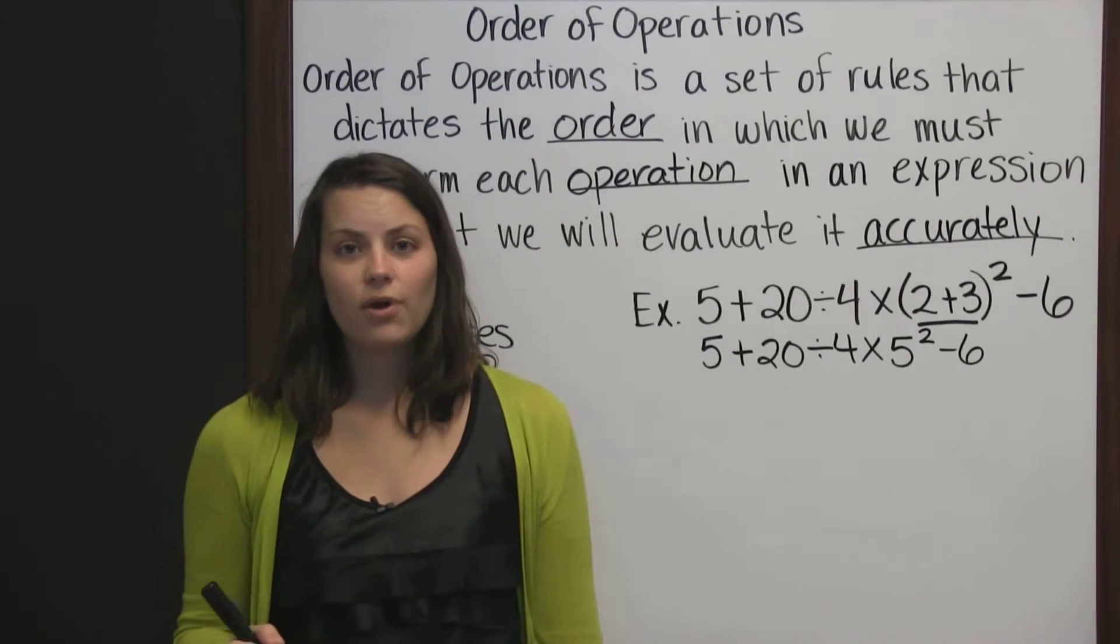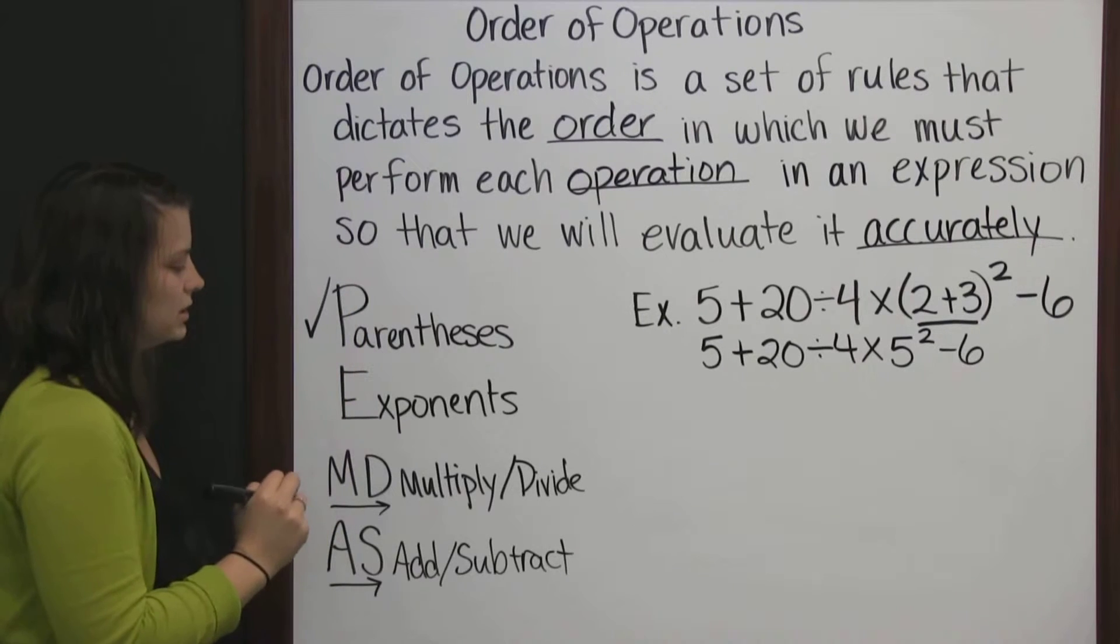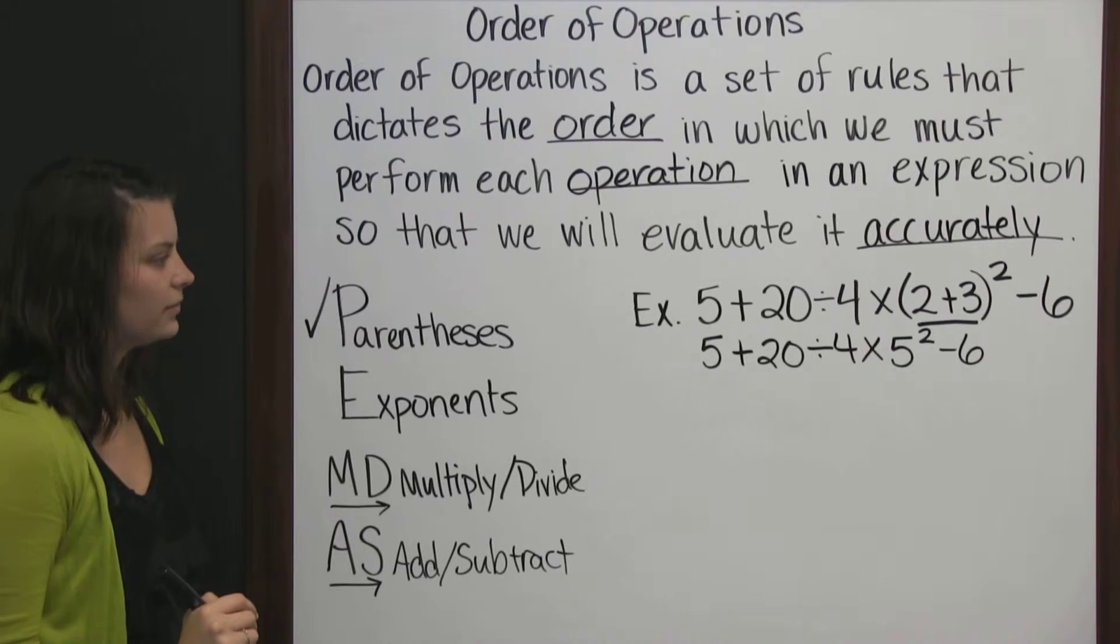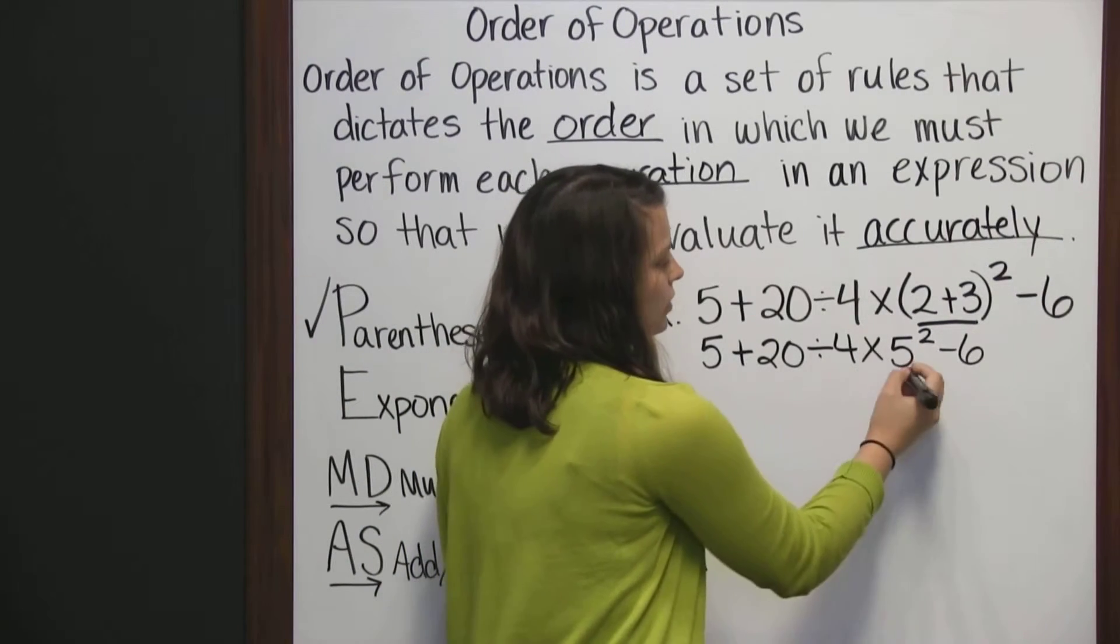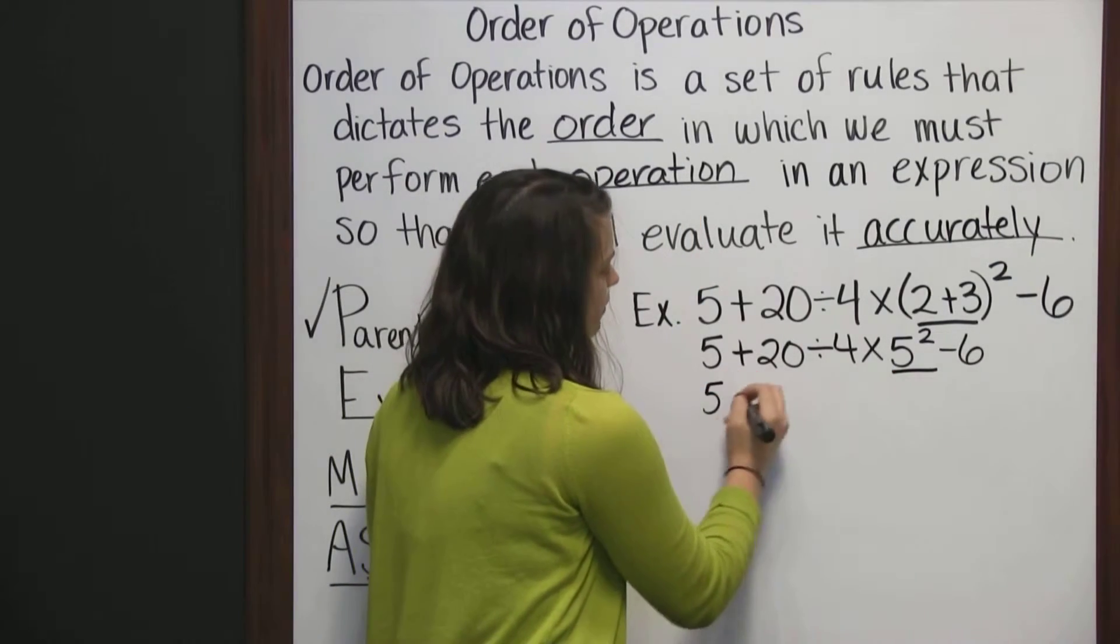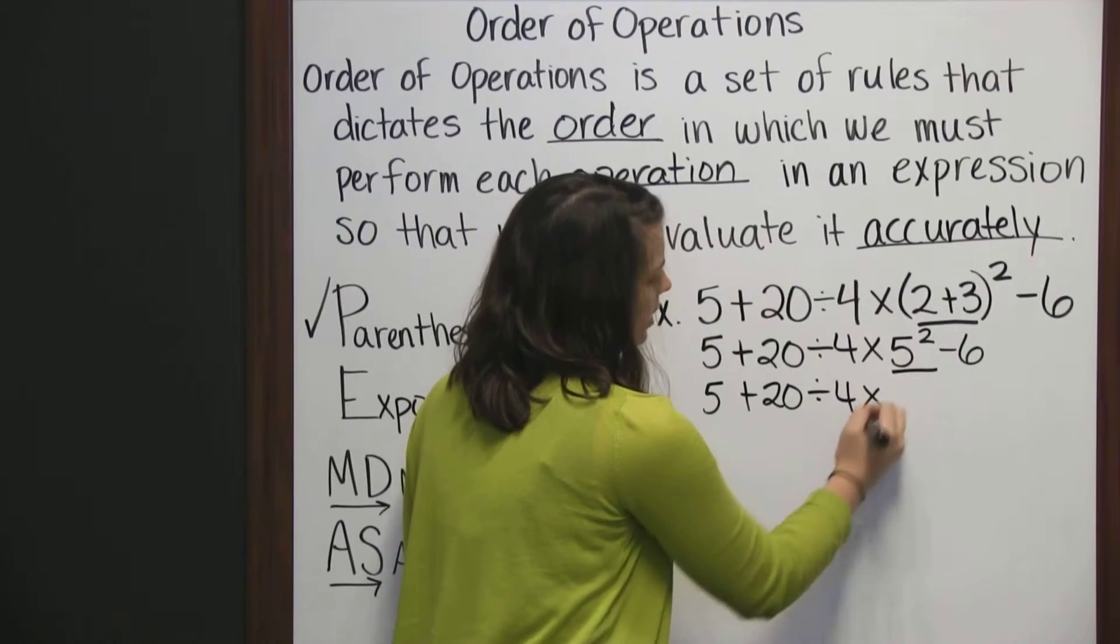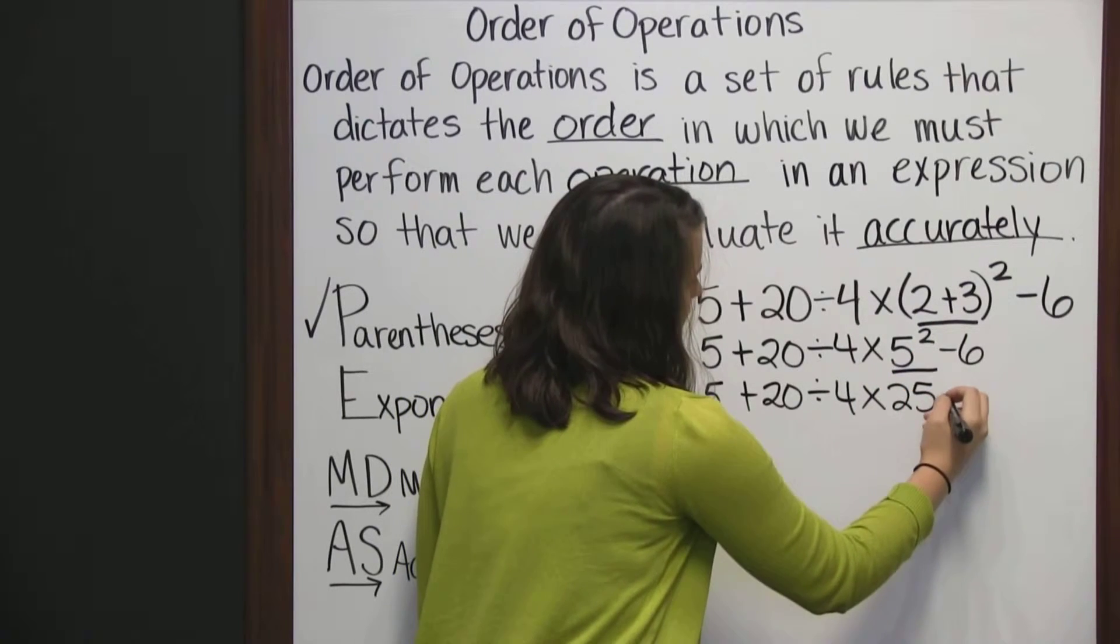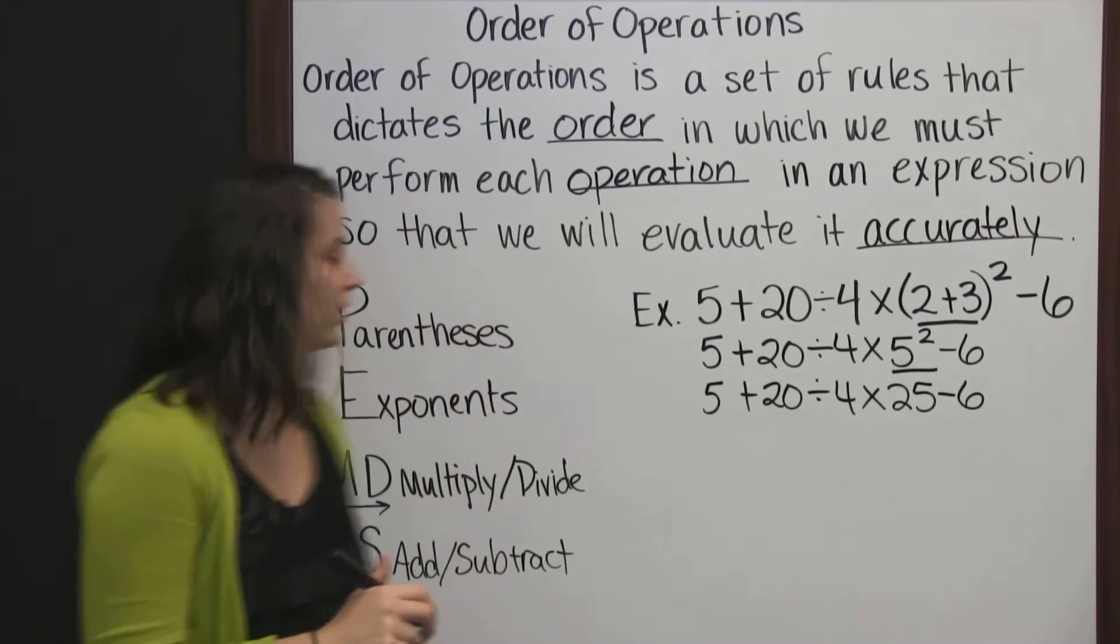Now we go back to our order of operations to see what we need to do next. We've done our parentheses. So now we need to look and see if we have any exponents we can simplify. And we do right here, 5 squared. So that's the next operation we need to do. So bring down the 5 plus 20 divided by 4 times 5 squared is 25, minus 6.